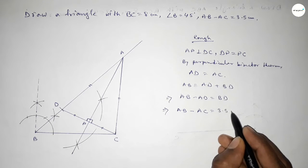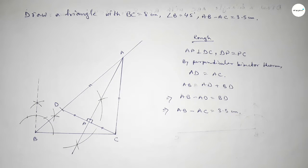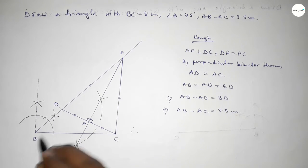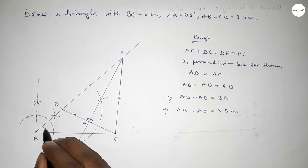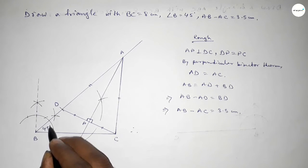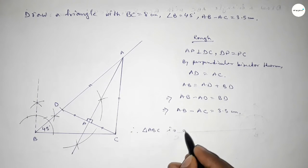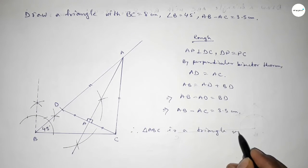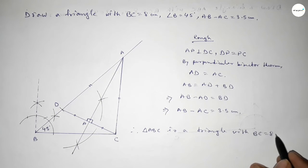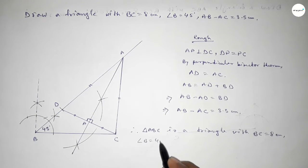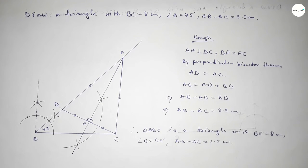BD equals 3.5 centimeters, so that's the proof. Therefore triangle ABC is a triangle with BC equal to 8 centimeters, angle B equal to 45 degrees, and AB minus AC equal to 3.5 centimeters. That's all — thanks for watching. If this video is helpful to you, please share it.